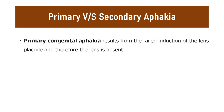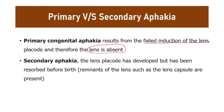In primary congenital aphakia, it results from the failed induction of the lens placode, so the entire lens is absent. In secondary congenital aphakia, the lens placode has developed but gets resorbed for some reason before birth. Here only the remnants of the lens, such as the lens capsule, will be present while the other parts of the lens are absent.